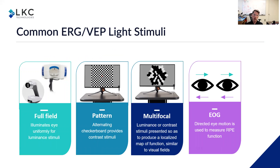Some common ERG and VEP light stimuli include a full field stimulus. Here's a miniature handheld Ganzfeld called Redaval, and here's a bigger Ganzfeld for two eyes called a Sunburst, part of our UTAS system. Those full field stimuli illuminate the eye uniformly for a luminance stimulus. You can also have a pattern-based stimulus, like a checkerboard pattern that alternates which squares are white and which squares are dark, for a contrast stimulus, or you can go from a checkerboard to a uniform gray. You can also have multifocal stimuli that can generate either a luminance or contrast stimulus presented in such a way as to localize the response of the visual system, similar to how visual fields can localize the response.